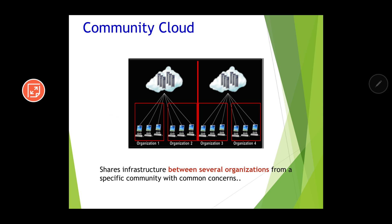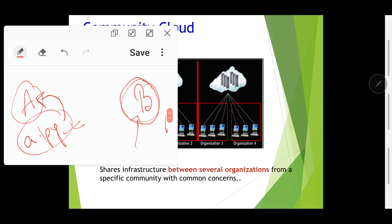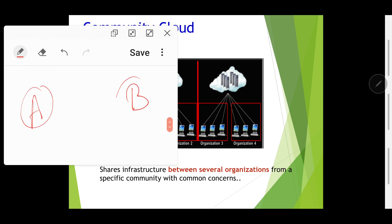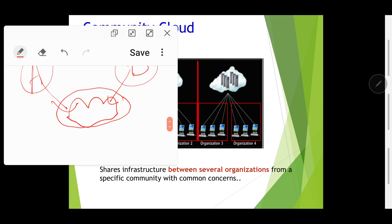Next is community cloud. Community cloud shares infrastructure between several organizations from a specific community with common concerns. For example, suppose organization A and organization B want to collaborate. Both organizations can share a single cloud service. If more than one organization shares a single cloud service, it is known as a community cloud.